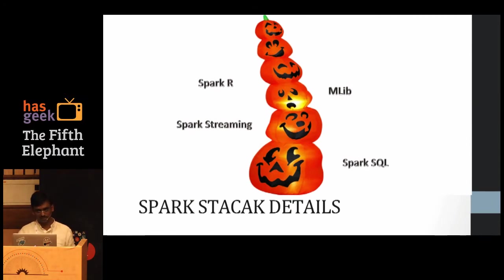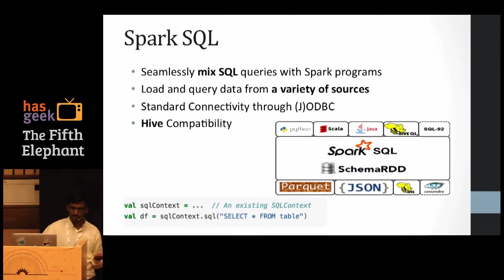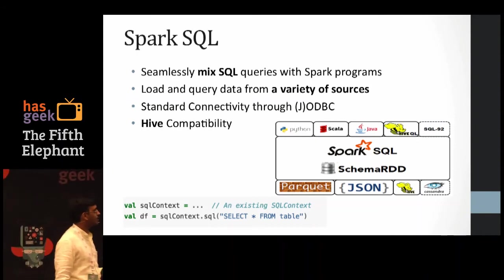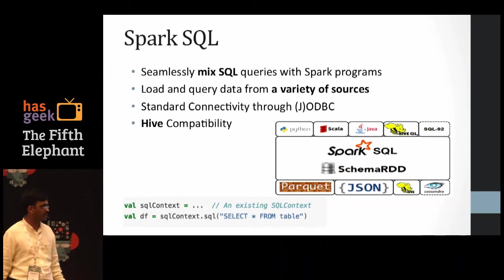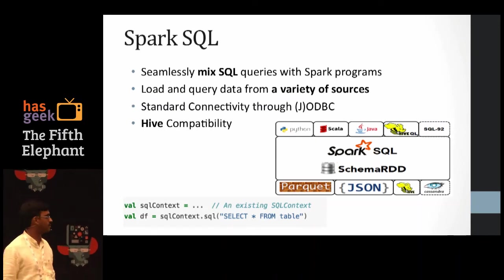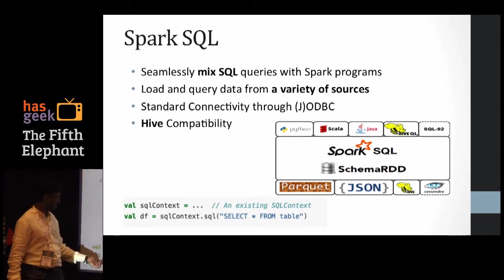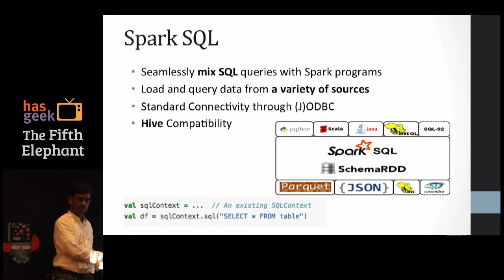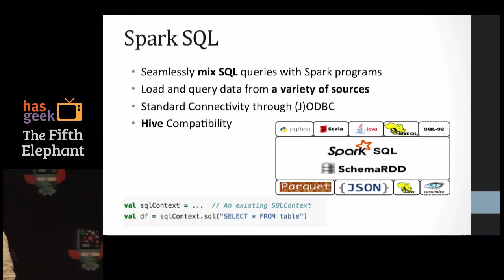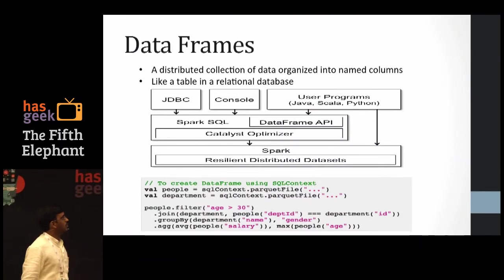Now the Spark stack details, starting with Spark SQL. You can use SQL with your Spark programs. You can load and query data from a variety of sources — JSON, Cassandra, Hive, Parquet — and external Spark packages support even more data source types. Once you get the SQL context from SparkContext, you just call spark.sql('SELECT * FROM table') and get a DataFrame back. The schema is automatically determined from the data source — no need to define it manually. JDBC and Hive compatibility are also supported.